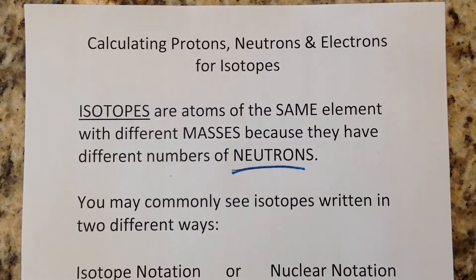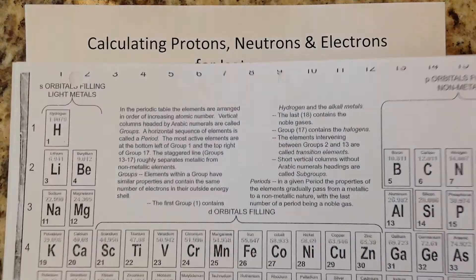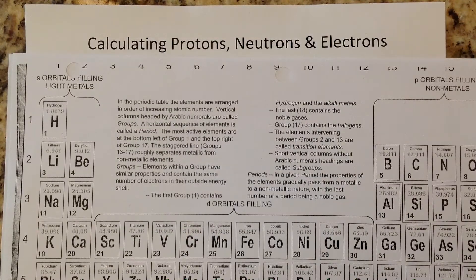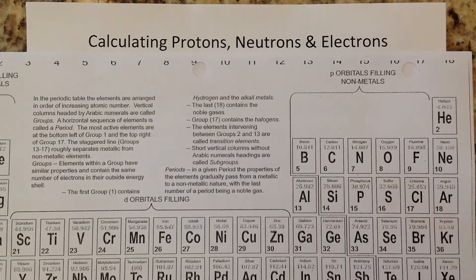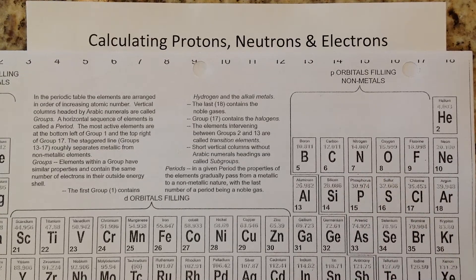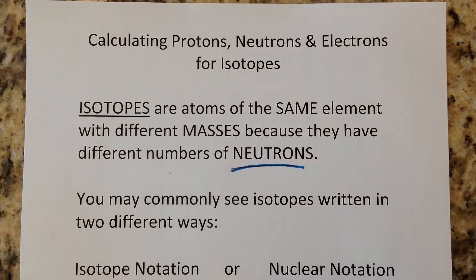Most students are usually really surprised when I tell them there are actually three different carbon atoms. You look at the periodic table and you make the assumption — a reasonable assumption if you've never been taught this — that there's one carbon, one nitrogen, one oxygen, etc. I'll use carbon as an example just because most students are familiar with it.